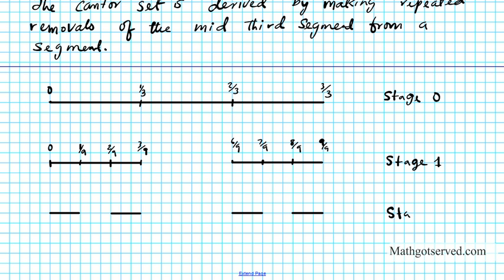Let's do one more stage. To generate stage 3, I'll take this stage of points, break them into 3 again, and take out the middle third. Always take out the middle third — that's how you finally arrive at the counter set. If you do this forever, you end up with a set of points. The segments get smaller and smaller, but they actually form points on this line.